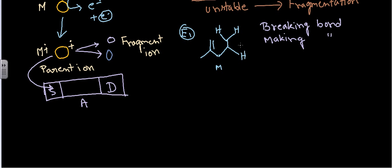In this molecule there are several hydrogens. One particular hydrogen is the gamma hydrogen. It is the gamma hydrogen because counting from the unsaturation point: this position is alpha, this is beta, and this is gamma. So this hydrogen is the gamma hydrogen. McLafferty rearrangement will only occur if we have a gamma hydrogen next to an unsaturation point, and here the gamma hydrogen is close to the unsaturation point.